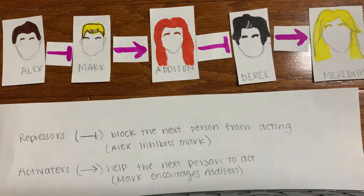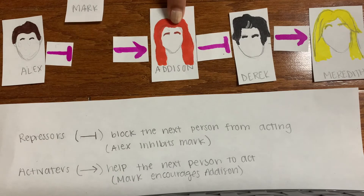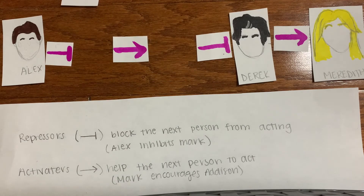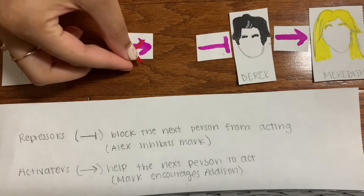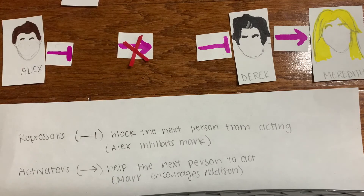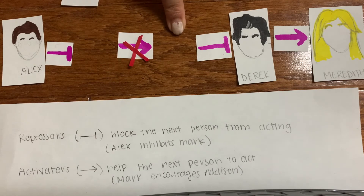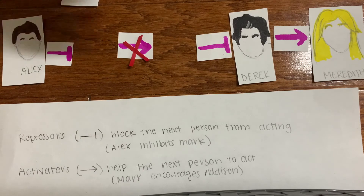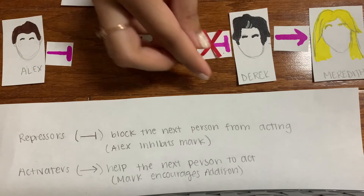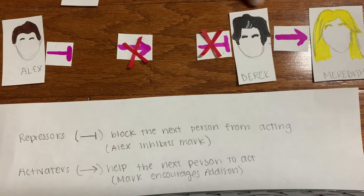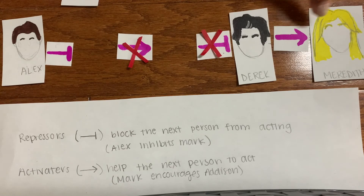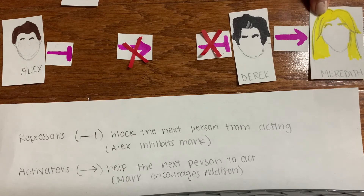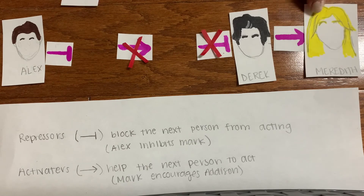Let's say that there's a mutation in both Mark and Addison. Because there's a mutation, Mark can no longer activate Addison, and Addison can no longer block Derrick. So therefore, Derrick will be able to activate Meredith, and the Meredith gene product will be transcribed.